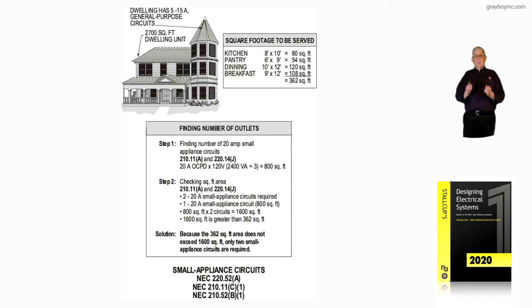Notice in the square footage to be served, boxed-in information to the right of the dwelling unit. We have the kitchen is 80 square foot. The pantry, when math is done, is 54 square foot.